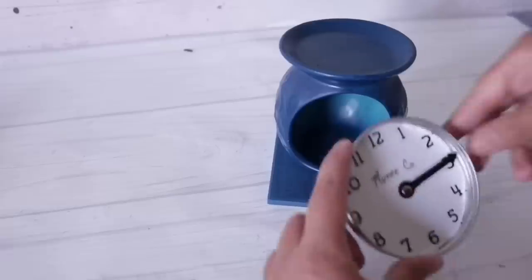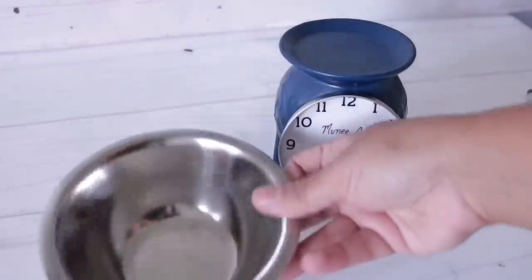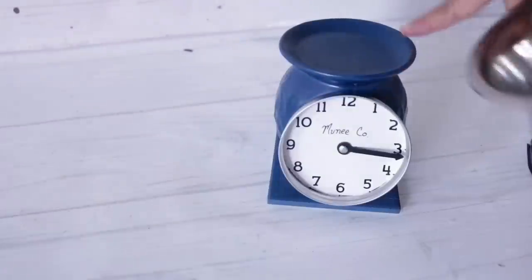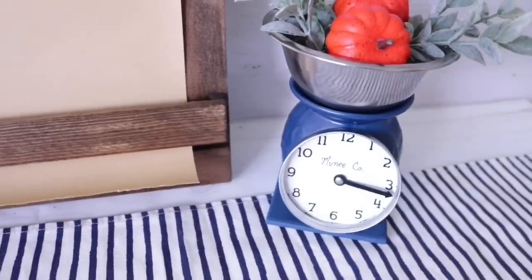This time around instead of using a trinket tray I'm going to go ahead and use this bowl which I found in the kitchen section of Dollar Tree. You can glue it down or keep it as is and then you can fill it with all your goodies and you have a really affordable faux scale.